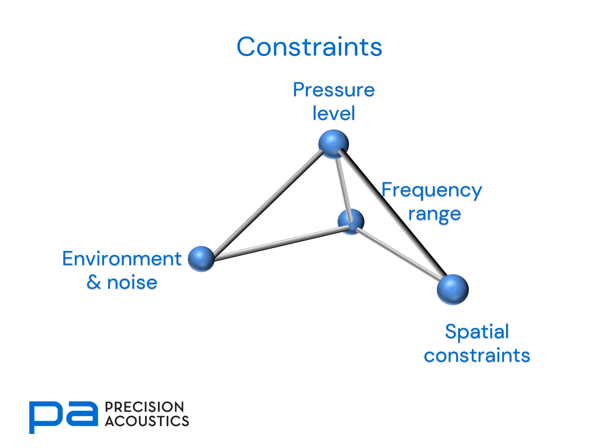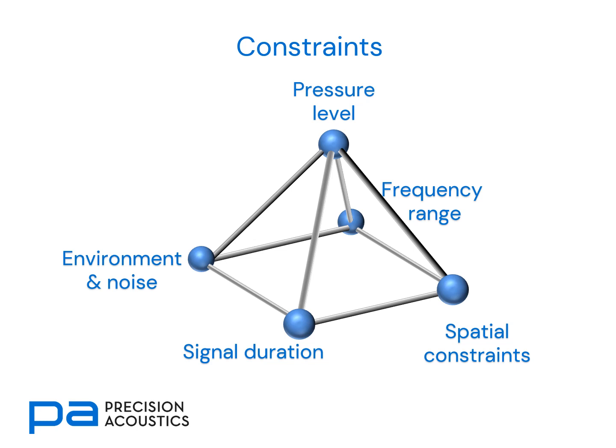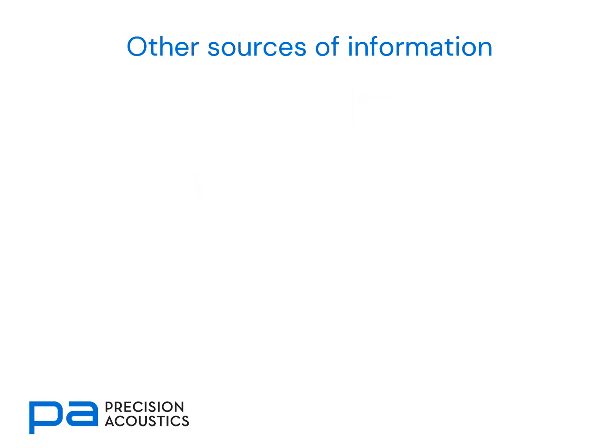The environment and noise in which we're trying to make measurements is also important, and this is often accompanied by signal duration. Specifically, if we've got large electromagnetic interference arising from our source transducer with a long signal, it can be difficult to separate acoustic and electromagnetic interference. It's only once we've considered all of these aspects together that we can home in on our final hydrophone selection. As mentioned, this is a compromise, and this tutorial is an overview of some of the things we need to consider.